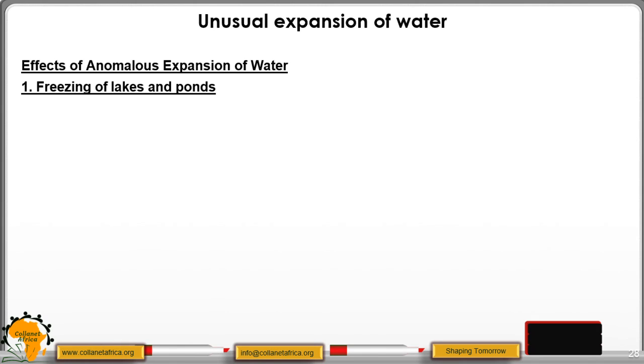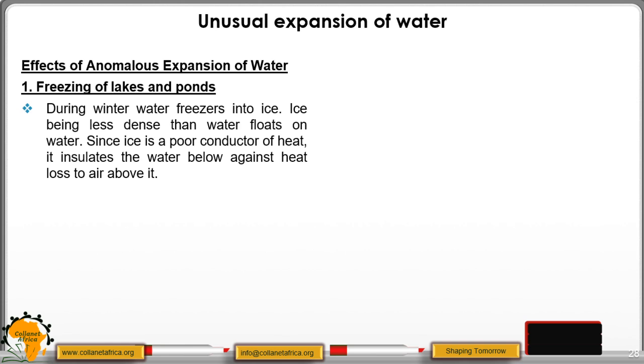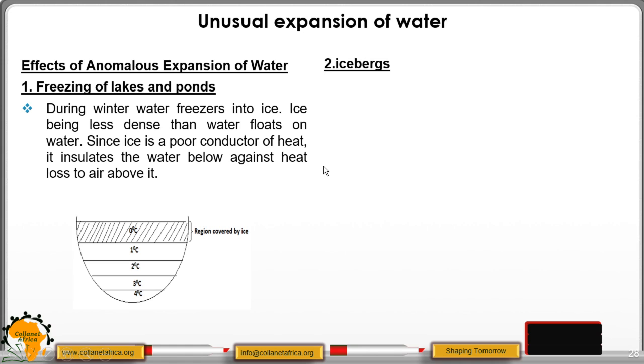Then we move to effects of anomalous expansion of water. First, the freezing of lakes and ponds. During winter, in very cold regions or very cold seasons, water freezes into ice. The ice is less dense because it has increased in size. It is less dense than water, and therefore the ice floats on water. When it floats on water, it acts as an insulator, and therefore the water below will have a conducive environment for the aquatic life. As you can see in our diagram here, we have ice that is acting as an insulator, but below that we have a conducive environment from 4 degrees to 1 degree where aquatic animals can live comfortably.